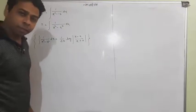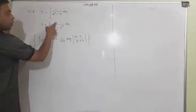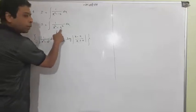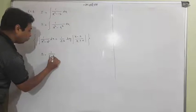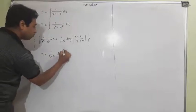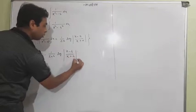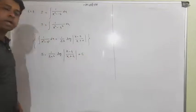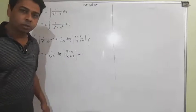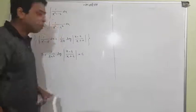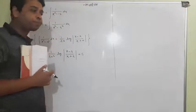Follow the formula. For 1 upon x squared minus a squared, a will be 4. The formula gives 1 upon 2 times 4, log of (x minus 4) upon (x plus 4) plus C. That is the answer. So this was very simple, but why is this simple question important?